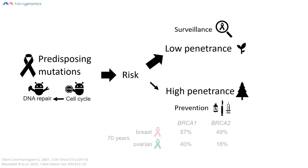A good example of high penetrance genes are BRCA1 and BRCA2. Here we see an example from published literature showing the likelihood of a woman developing breast or ovarian cancer by age 70 if she carries mutations in either of these two genes. There is a wide variety of published numbers depending on the population studied, but these represent some of the averages.